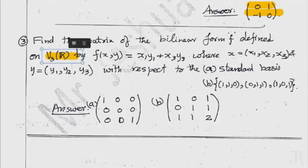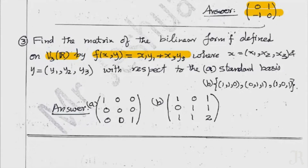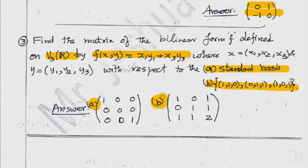For V3 of R, for example, the bilinear form with the standard basis gives a corresponding 3-by-3 matrix. Thank you.